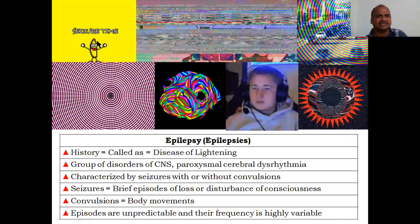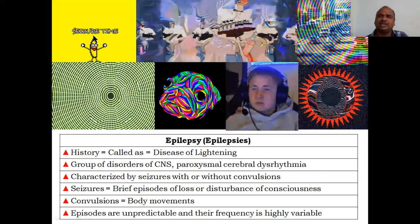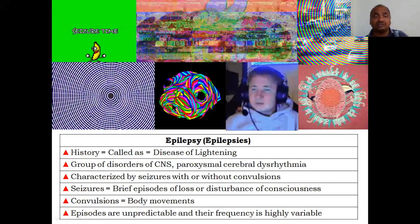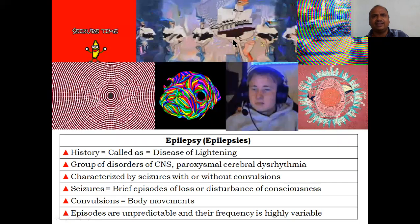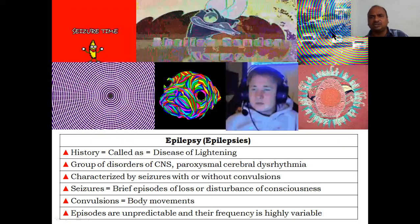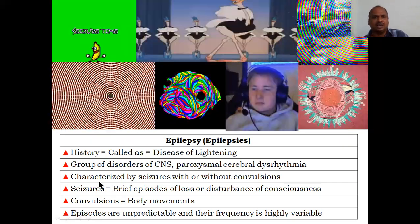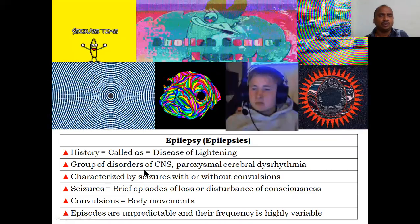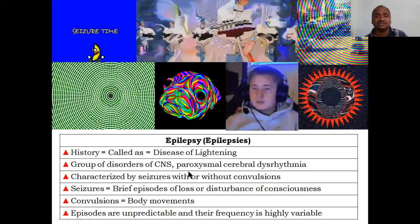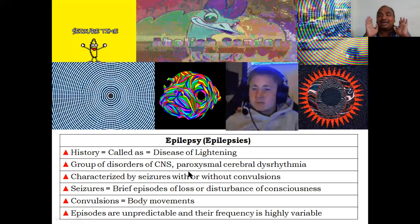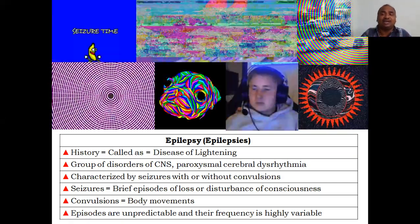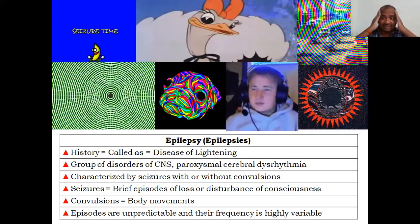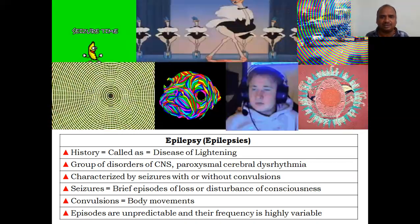Seizures are also called fits. The patient may experience a dog-face-like blurry vision — wherever they look, the road or TV appears distorted. Historically, epilepsy is called the disease of lightning. It is a group of disorders of the central nervous system characterized by paroxysmal cerebral dysarrhythmia — not cardiac arrhythmia, but cerebral dysarrhythmia. That is the key point.